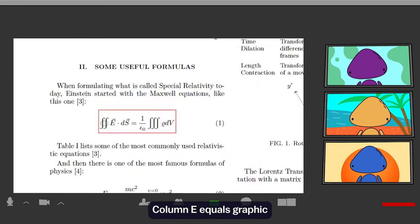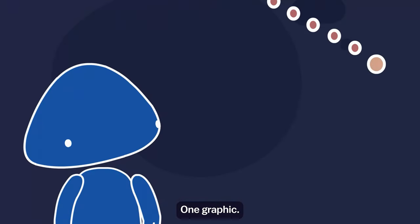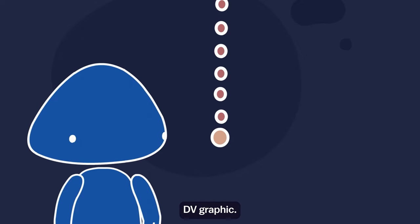Graphic. E-graphic. Commody s equals graphic. One graphic. Zero graphic. Graphic. DV graphic.